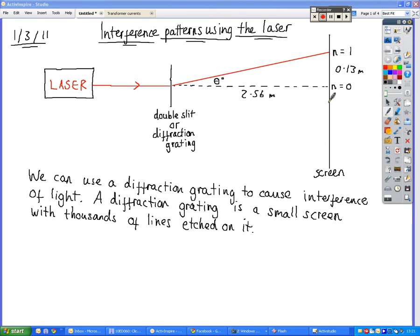A diffraction grating is basically a small screen with thousands of little lines etched on it. As light passes through those lines, it goes off in different directions, so it goes off at different angles. Because the various different rays of light have different distances to travel, they become in phase with each other or out of phase with each other. That's why we see a display of constructive interference and destructive interference at various points on the screen.